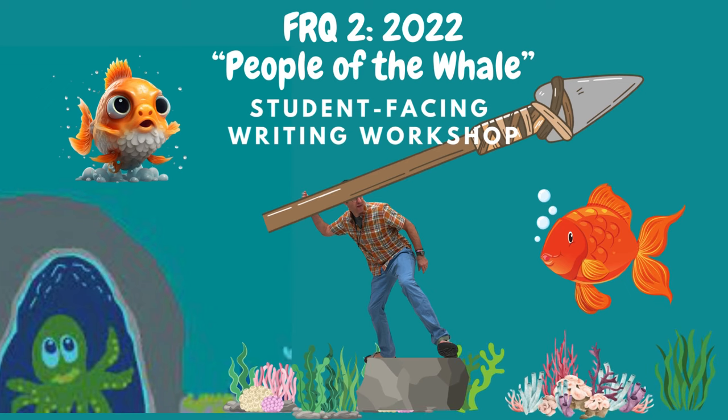All right, my AP literature friends, Christian Kuhn coming at you, affectionately known as the Bob Ross of Composition, and we got an interesting one today. We are going to tackle our octopus friend, probably one of the most intriguing prompts ever on an AP literature exam.